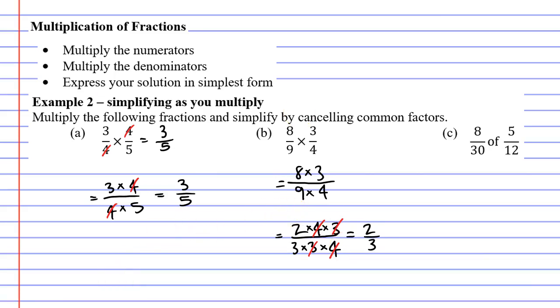Let's now move on to question C. We've got the word 'of', which means to multiply. So for our numerators, we get 8 times 5, and for our denominators, we get 30 times 12. Once again, we have no common factors, but we can manipulate our fraction a little bit.